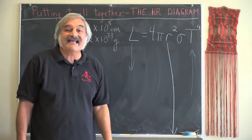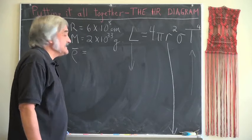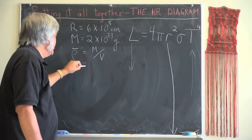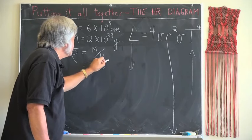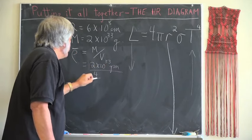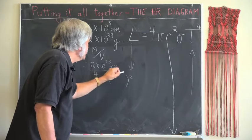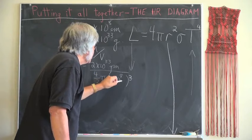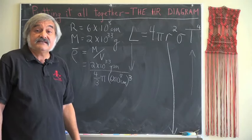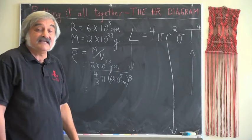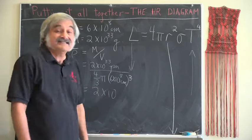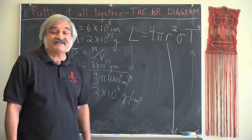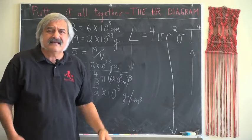Let's compute its average density. The average density is given by the mass divided by the volume. And for this object, it turns out to be 2 times 10 to the 33 grams divided by 4 thirds pi r cubed, where r is given by 6 times 10 to the 8 centimeters. You can do this calculation and you find that that density is equal to 2 times 10 to the 6 grams per cubic centimeter. Now this is just a number. Okay? Let's see if we can put this in real perspective.